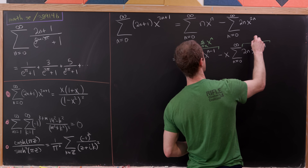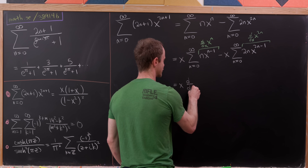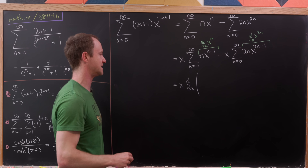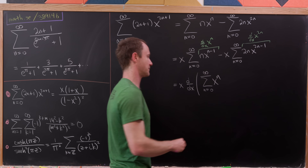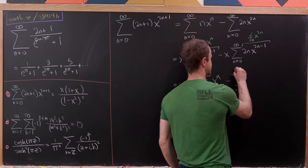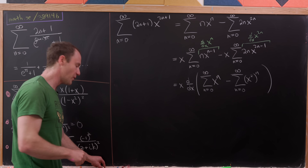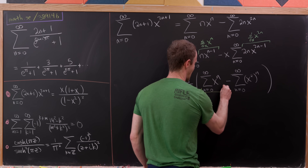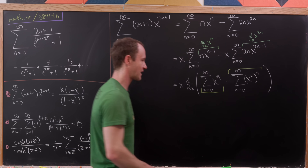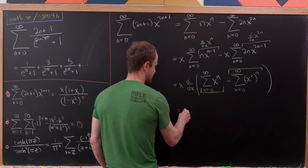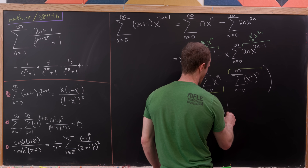This n times x^(n−1) looks like the derivative with respect to x of x^n, and this 2n times x^(2n−1) looks like the derivative with respect to x of x^(2n). That motivates me to write this as x times the derivative with respect to x, factoring the derivative and the x out of both sums, giving us x·(d/dx)[sum of x^n minus sum of x^(2n)], which I write as x^(2n) = (x²)^n. Using the geometric series formula, this becomes x times the derivative of 1/(1−x) minus 1/(1−x²).